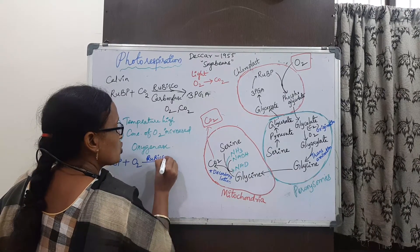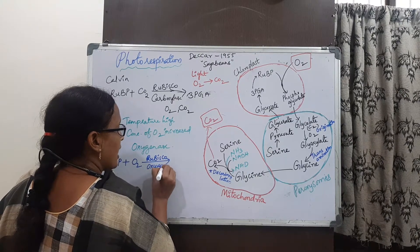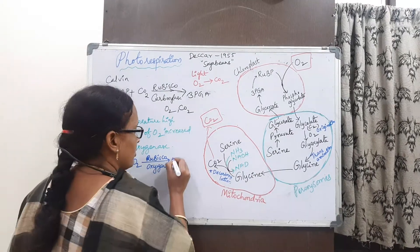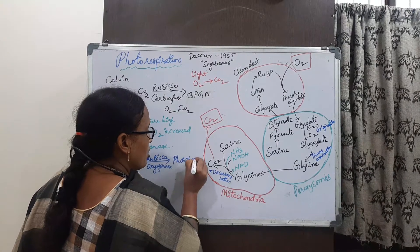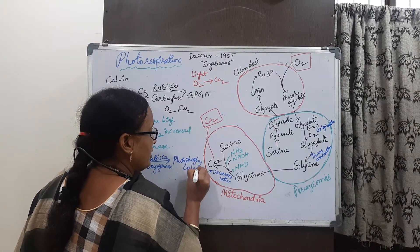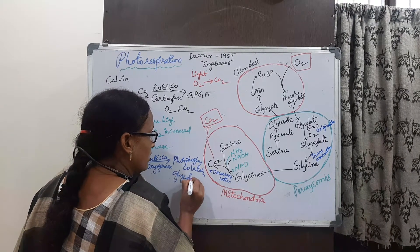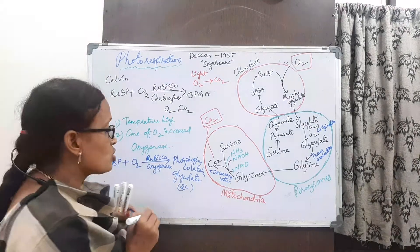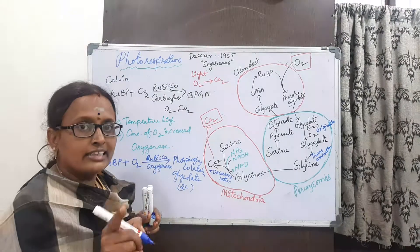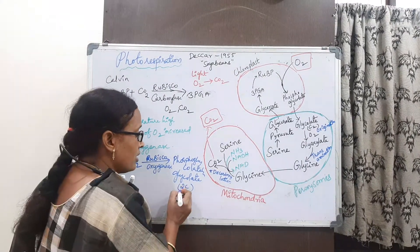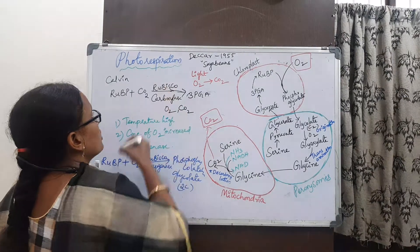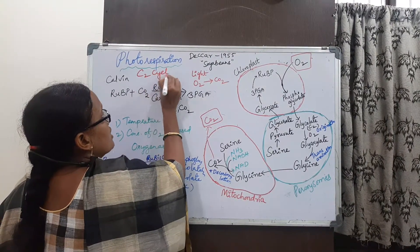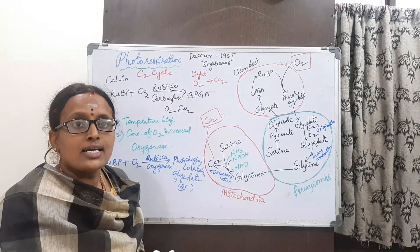Here, with Rubisco acting as an oxygenase, it produces phosphoglycolate and glycolate — two two-carbon containing compounds. That is the reason photorespiration is also known as the C2 cycle, because the first compound formed, phosphoglycolate, contains glycolate with two carbon atoms.